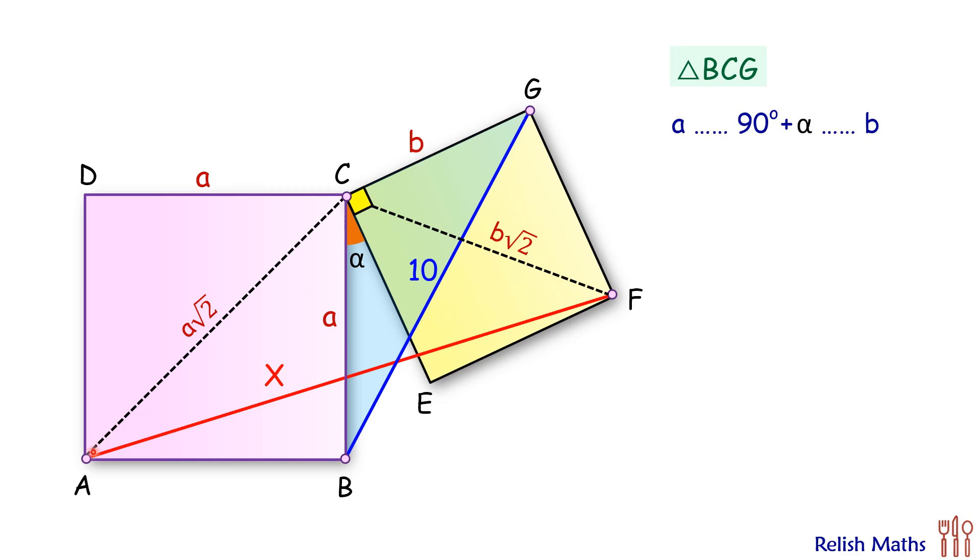Same way, if we consider triangle ACF, here CF is the diagonal and CE is the side. The angle between diagonal and side is 45 degrees, and here this angle will be 45 degrees.